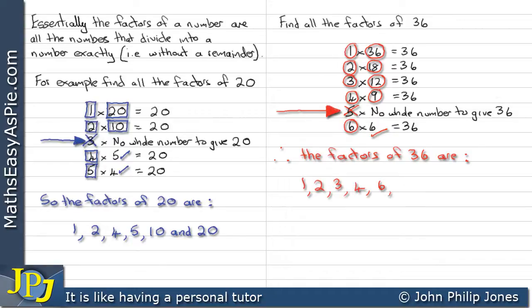which I'm writing down again here. 1, 2, 3, 4, 6, 9, 12, 18, and 36. So they are the factors that make up the factors for 36.